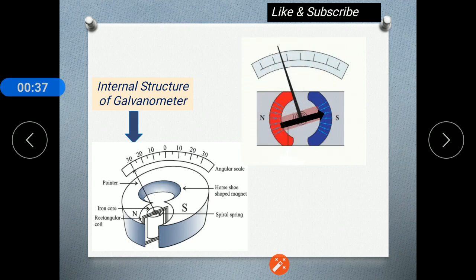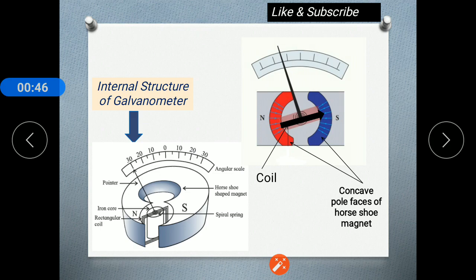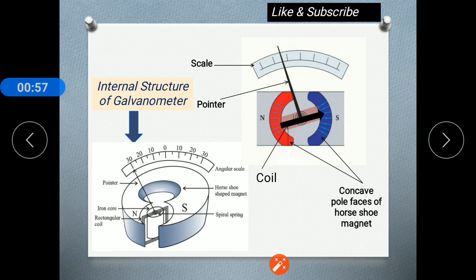The rectangular coil is suspended in between the concave pole faces of a horseshoe magnet. The pointer is attached to the coil and helps to take the reading, and with the angular scale we take the reading of current or the potential difference.